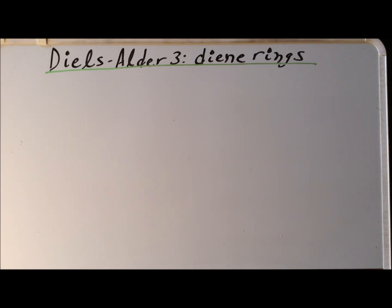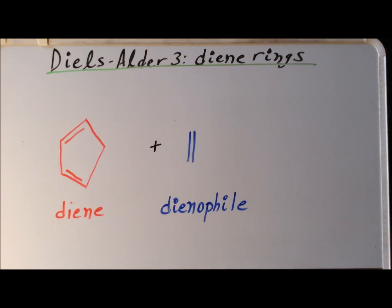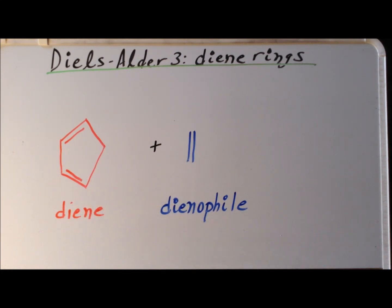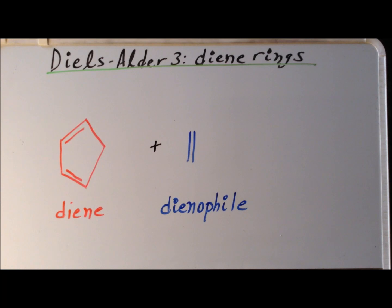Hello and welcome to the third video in our series on the Diels-Alder reaction. In this video, we are going to look at the case where the diene has a ring structure. We recall that the two essential reactants in a Diels-Alder reaction are the diene, which must be in the S-cis conformation, and the dienophile, literally the diene lover. Because of this restriction, we can guarantee the correct conformation if we have a locked ring structure.